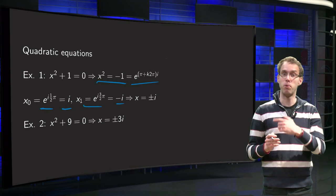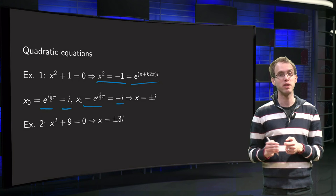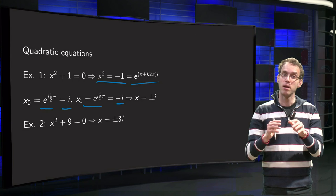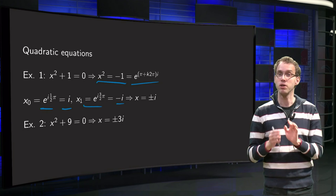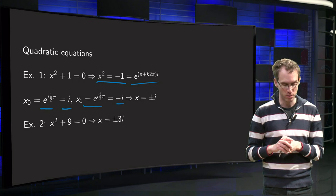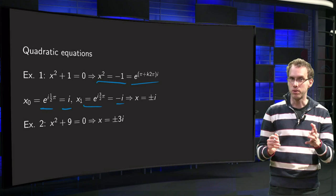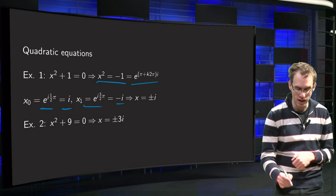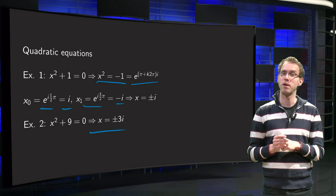So your solutions are plus or minus i. You can verify that easily by plugging them into the original equation: i squared plus 1 equals minus 1 plus 1 equals 0 — OK. And minus i squared plus 1 equals minus 1 plus 1 equals 0 — also OK. Similarly, for x squared plus 9 equals 0, the solutions will be plus or minus 3i.